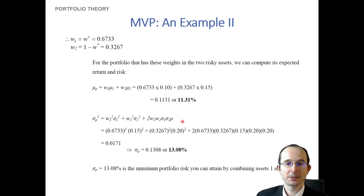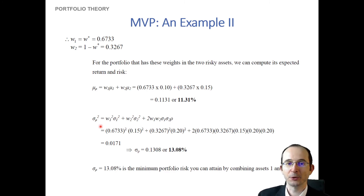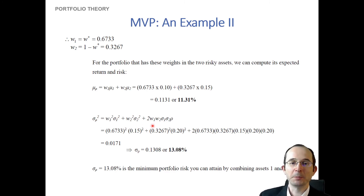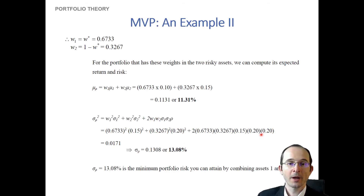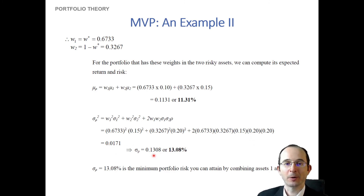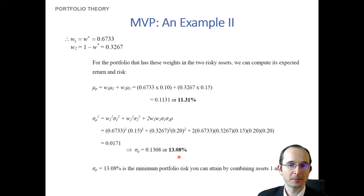What about the variance? The variance of the portfolio with two risky assets formula comes to our aid. We plug in our weights, standard deviations, and correlation, and we see that our portfolio variance corresponds to a standard deviation of 13.08%.